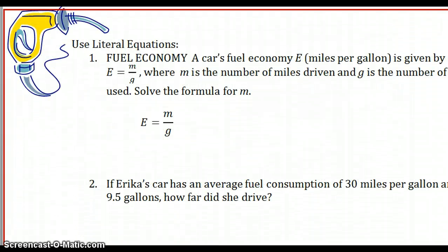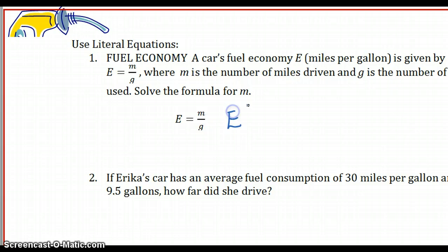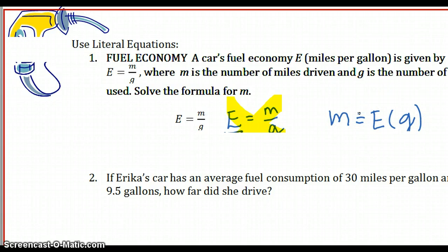On the next page are some literal equations that have practical real-life application. To figure out fuel economy, a car's fuel economy, we'll call that E, is how many miles per gallon the car gets. That's the formula E equals M over G, where M is the number of miles driven, and G is the number of gallons of fuel. Solve this formula for M. This is a proportion. E is understood over 1, so I am allowed to use cross product here. When I cross multiply, M times 1 is M, and I'm going to have E times G.